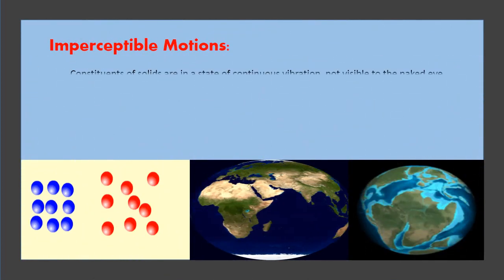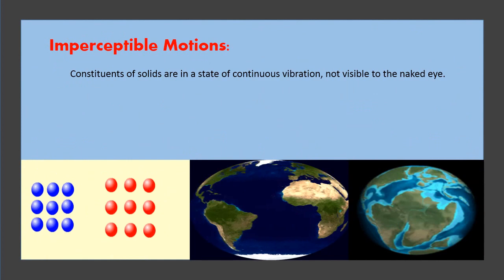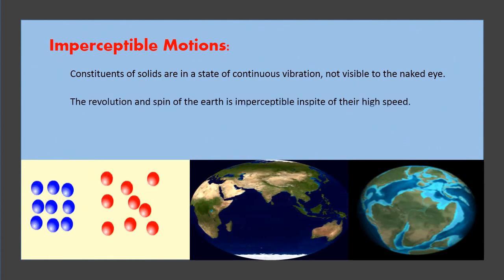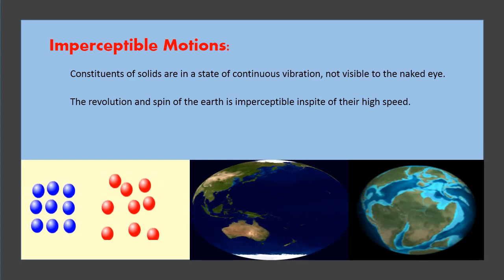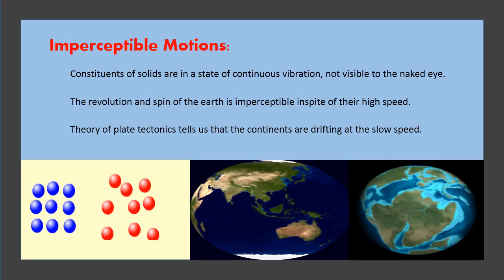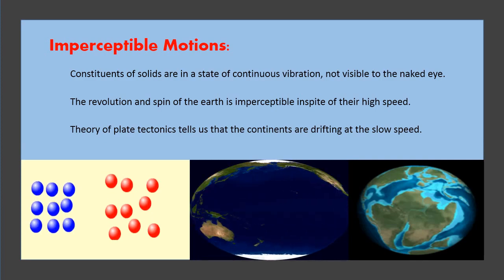Constituents of solids are in a state of continuous vibration not visible to the naked eye. The revolution and spin of the earth is imperceptible in spite of their high speed. The theory of plate tectonics tells us that the continents are drifting at a slow speed.